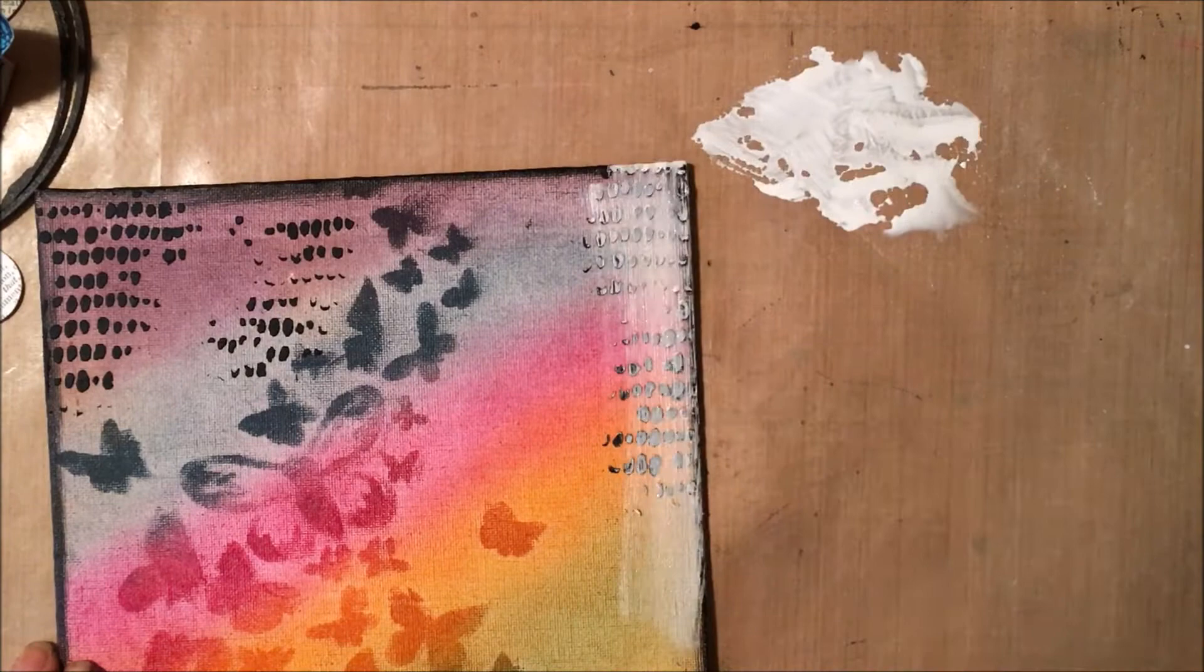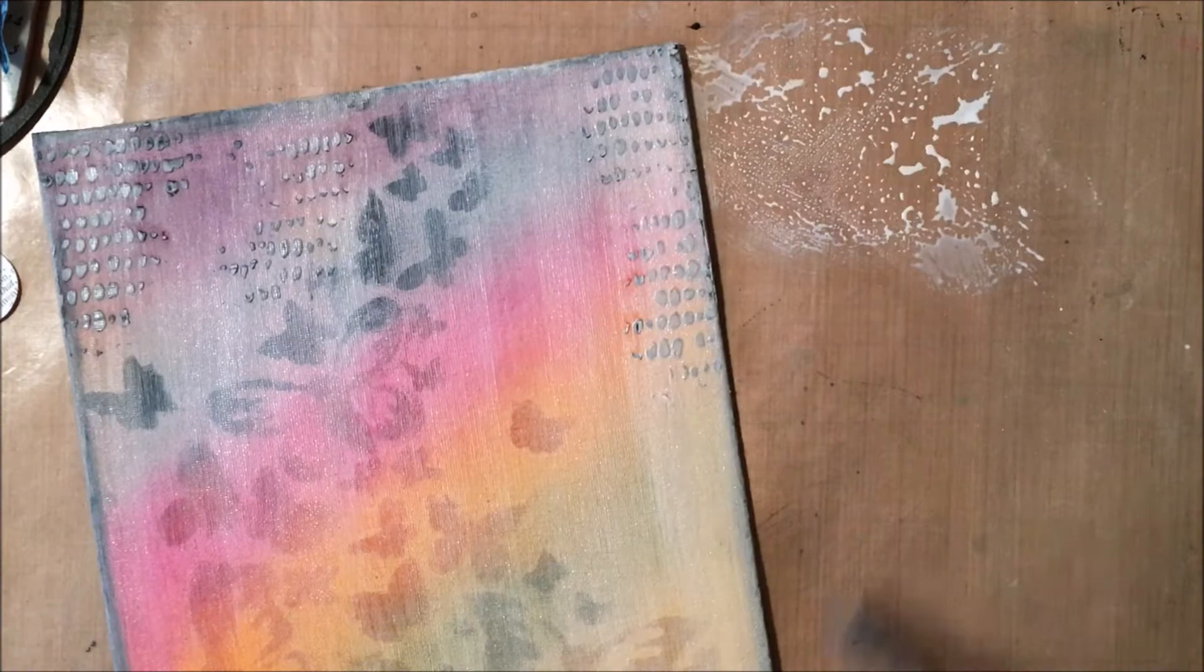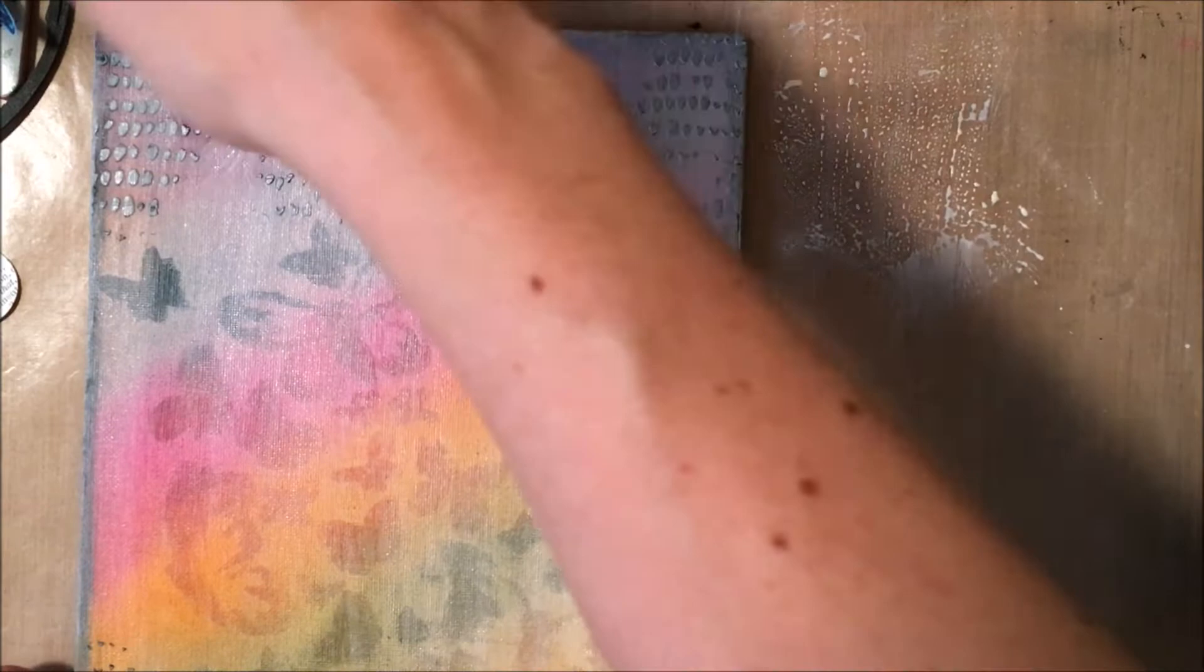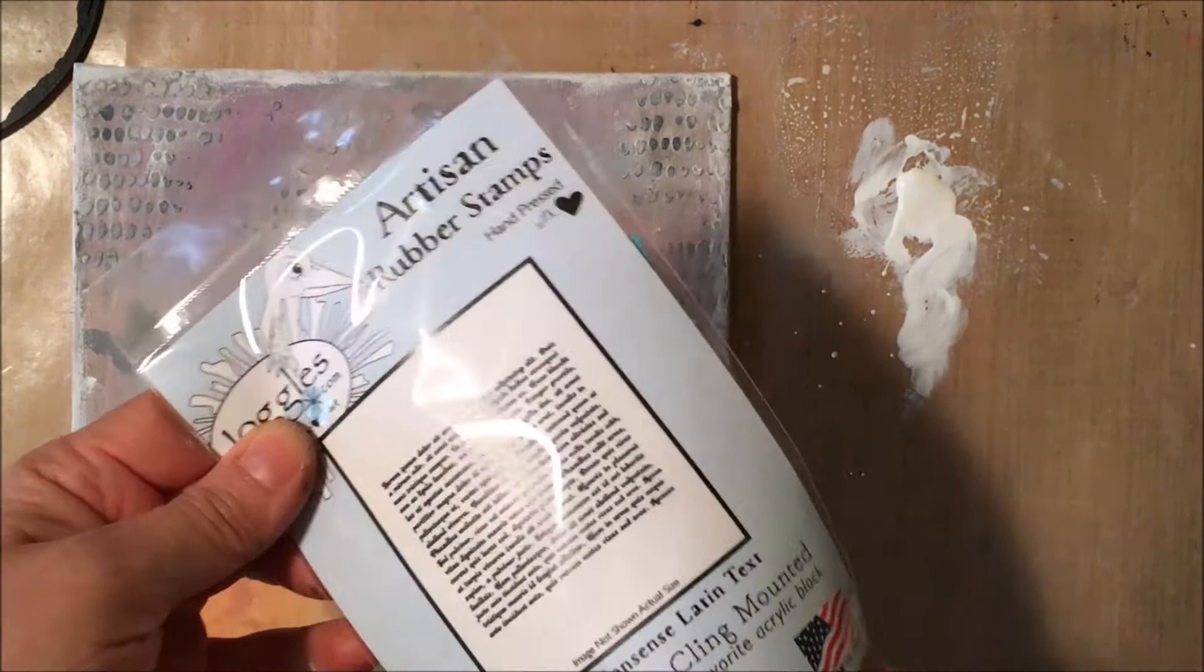And so all I did was water down some gesso and I have a pretty dry brush and I'm just brushing that on over the canvas. So I'm going over the edges and the whole background. So you're still going to see that butterfly design in the background but it's just going to tone down that black so it's not so stark. And I'm going over the black embossing paste as well. And so I also even went over the edges a little bit with my finger just to cover up that black.